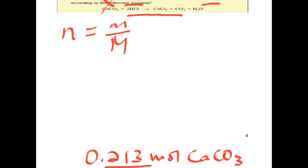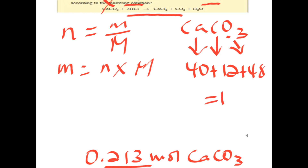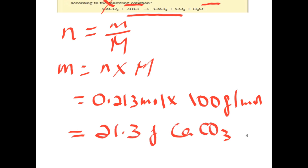Now, how many grams of calcium carbonate are needed? The mole equals mass over molar mass. The molar mass of calcium carbonate — calcium, carbon, oxygen — is 100 grams per mole. Moles = 0.213. So 0.213 × 100 = 21.3 grams of calcium carbonate are needed to react with 15 grams of HCl.